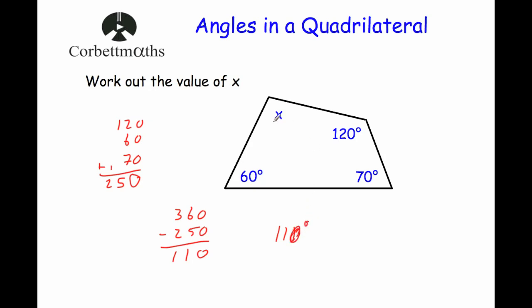And that's it. So if you want to find a missing angle in a quadrilateral and you know three of them, just add the three angles up and take it away from 360 degrees.